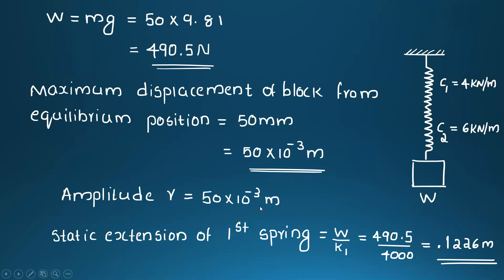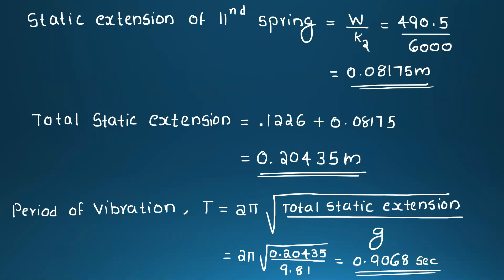Static extension of first spring equals W divided by k₁, that is 419.5 divided by 4000 equals 0.126 meter. Static extension of second spring equals W divided by k₂, that is 419.5 divided by 6000 equals 0.08175 meter. Total extension equals 0.20435 meter. Period of vibration T equals 2π times square root of total static extension divided by g equals 2π times square root of 0.20435 divided by 9.81 equals 0.9068 second.